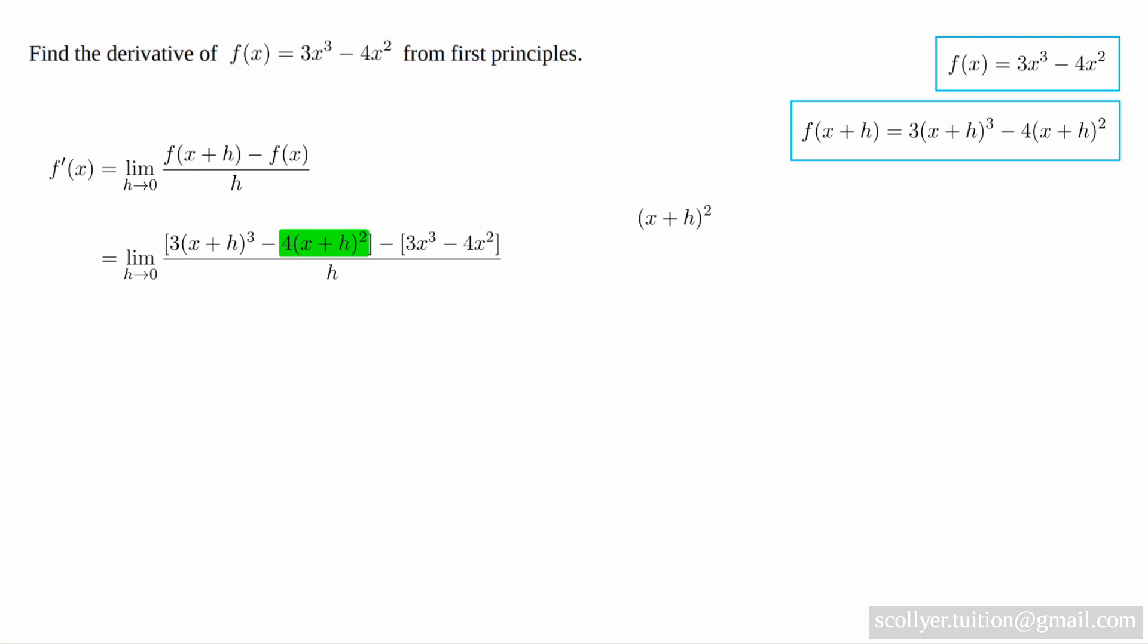We expand x plus h all squared using FOIL, and on bringing together like terms, we obtain x squared plus 2hx plus h squared. Thus, 4x plus h all squared becomes 4 times that quantity, which gives us 4x squared plus 8hx plus 4h squared.